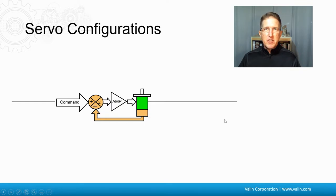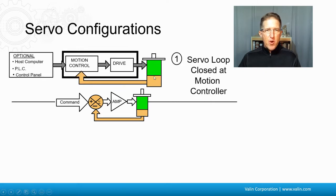So there's a couple different configurations of servo systems. Again, here is the basic servo loop. Now, that motor, the feedback on that motor can go back to the motion controller. Here's the HMI. Here's the motion controller. Here's the drive. And this is where the servo loop is closed at the motion controller.